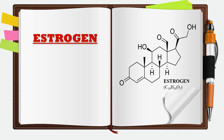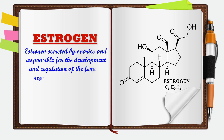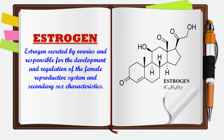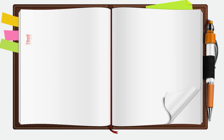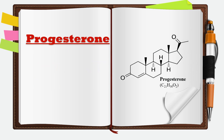The next steroid hormone is estrogen. It is an 18 carbon atom molecule with molecular formula C18H24O2. This hormone is secreted by the ovaries in females and is responsible for the development of the female reproductive system and the secondary sexual characteristics in females.